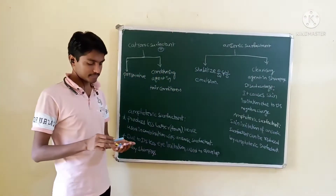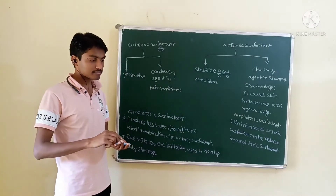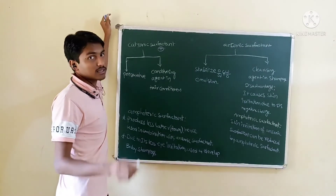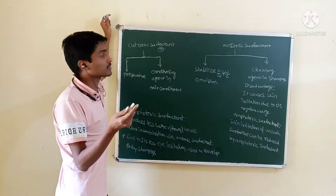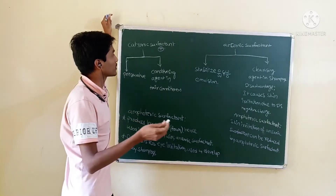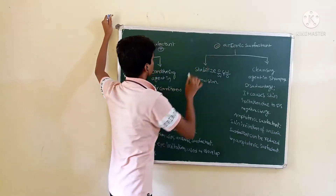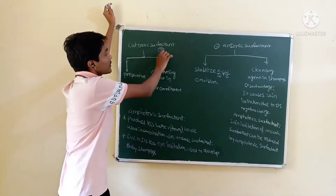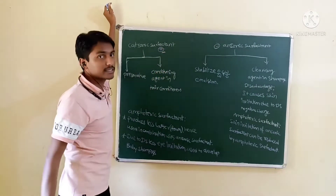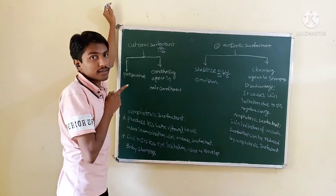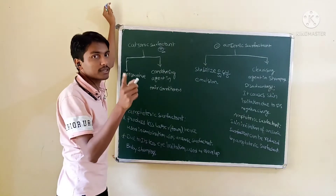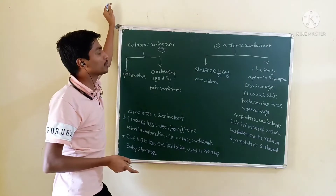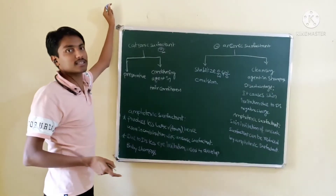The topic is surfactants — cationic and anionic surfactants used in cosmetics. A cationic surfactant means it has a positive charge. The application of a surfactant depends upon whatever charge it will have.